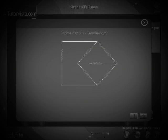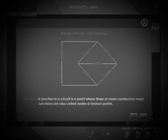Bridge circuits terminology. A junction in a circuit is a point where three or more conductors meet. Junctions are also called nodes or branch points. A loop is any closed conducting path.